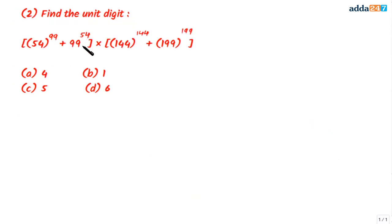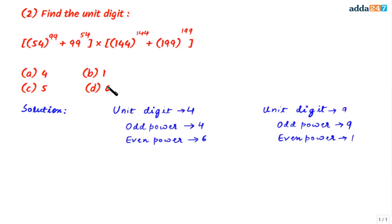Let's take the second question. Here we have to find the unit digit of this expression — what will be the unit digit when we simplify it? These are the options. The trick we'll use is: if the unit digit of a number is 4 and the power is odd, the unit digit in the answer is 4; if the power is even, the unit digit is 6.